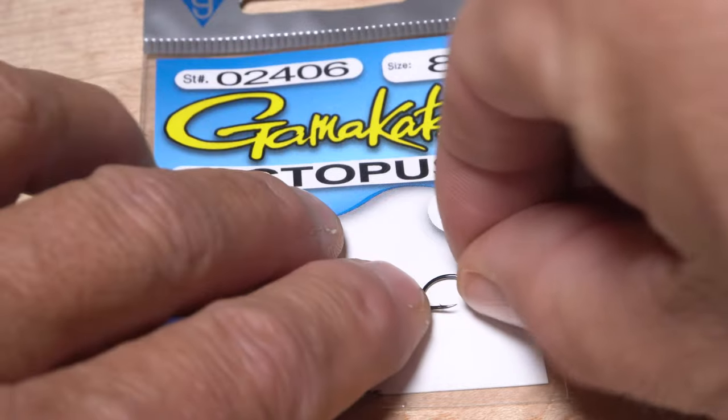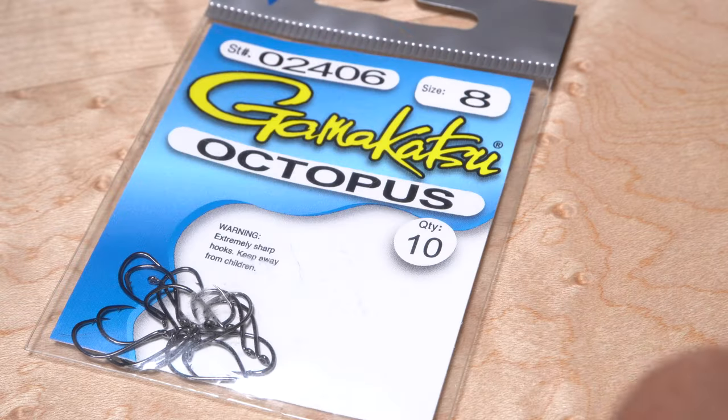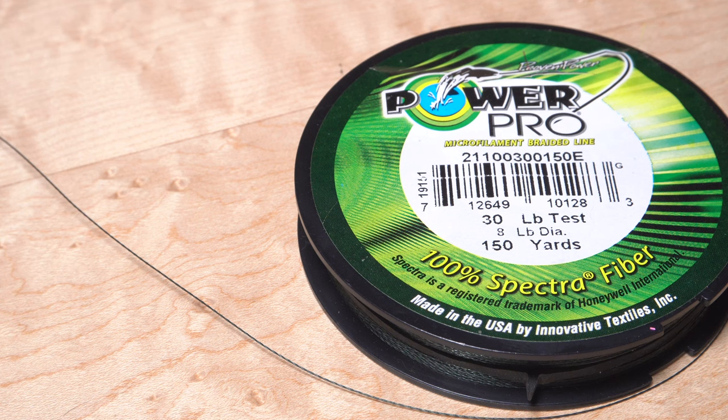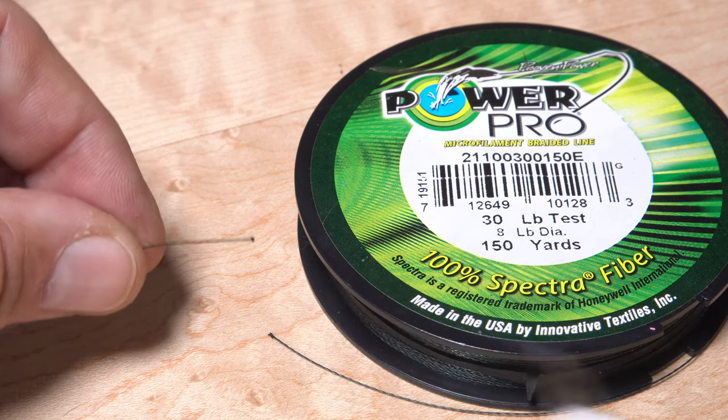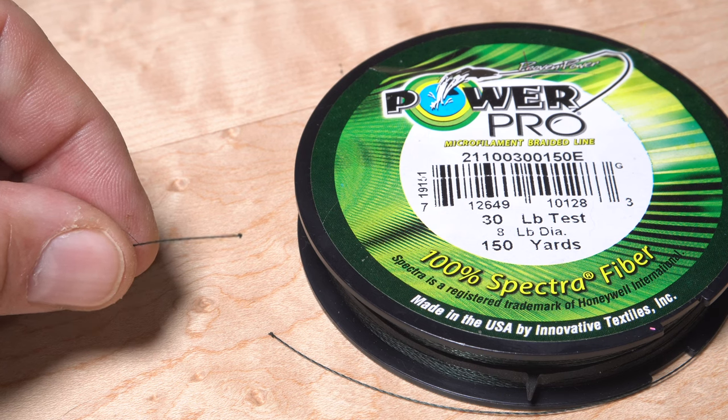I'm going to use a Gamakatsu size 8 octopus hook to go with this shank and 30 pound test Power Pro braided line to connect it to the shank. A cauterizing tool works great for cutting braid.